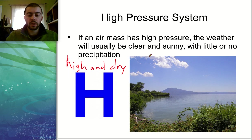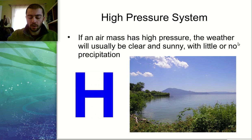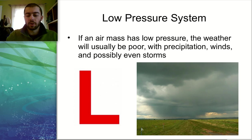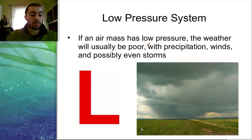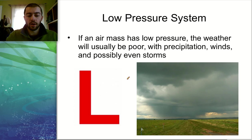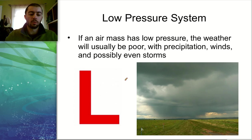The other type of pressure system is a low pressure system, which is going to bring a lot more unpleasant weather. Low pressure systems usually create turbulent or unsettled weather. You could end up with heavy precipitation, storms, and high winds — any of these things could be reflective of a low pressure system.